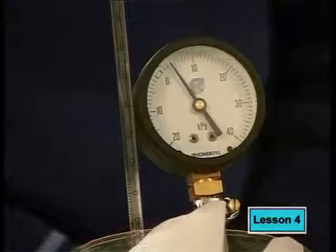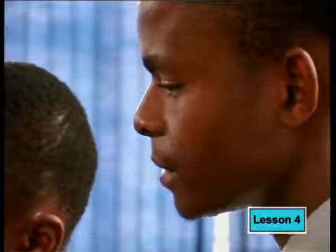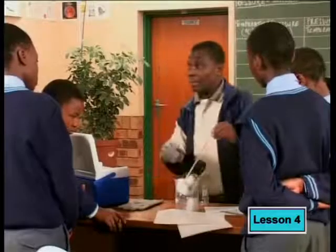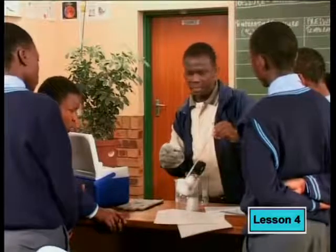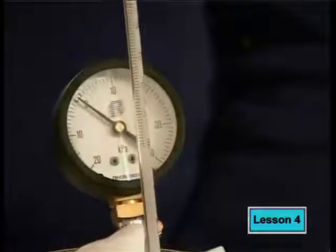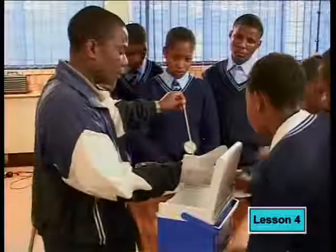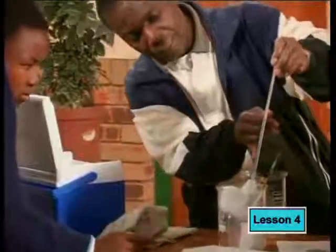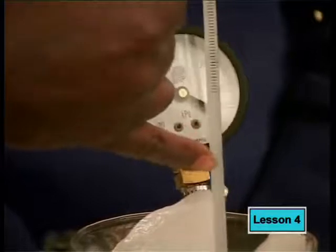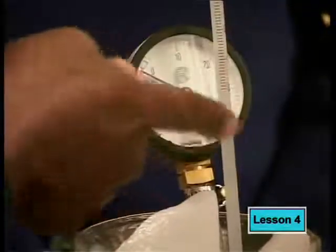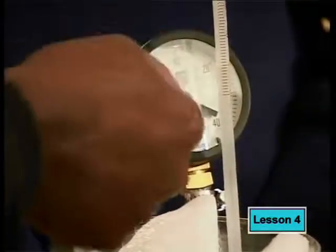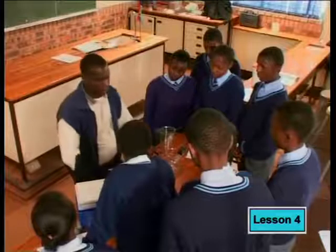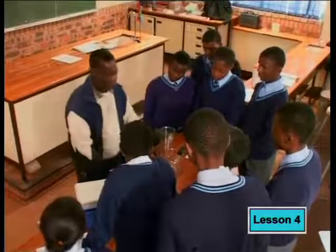What's happening to the pressure gauge? The pressure is decreasing. Remember, when we started the temperature was about 19 degrees Celsius. Let's check the temperature now — it's just below minus 10. Look at the mercury running. Because of that, we cannot get a correct reading of the temperature. Now we saw that when we place the Jolly Bulb into dry ice, the pressure decreases as the temperature decreases.